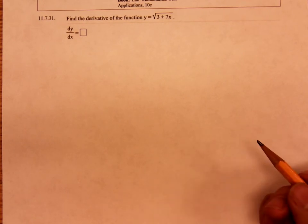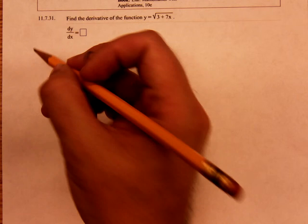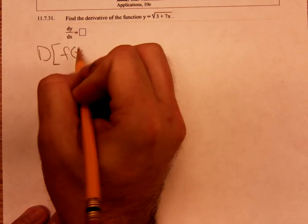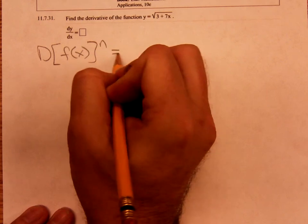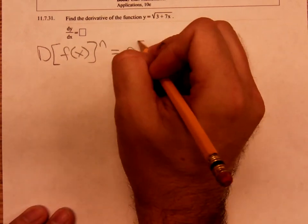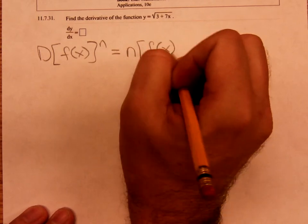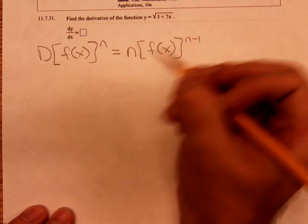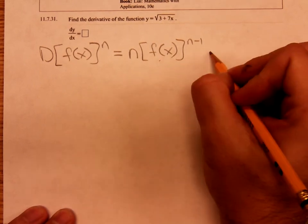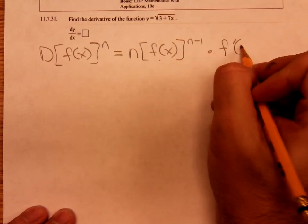Recall the generalized power rule. The generalized power rule said that if you wanted to differentiate a function of x raised to power, you differentiate the power first, you differentiate that outside function first, leaving the inside function alone, you then multiply by the derivative of the inside function.